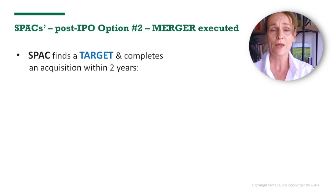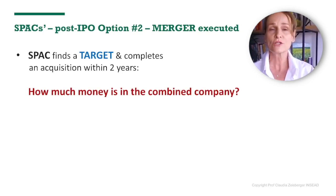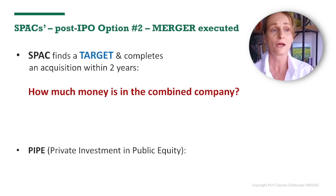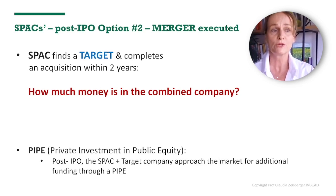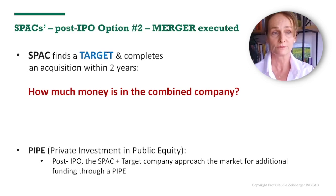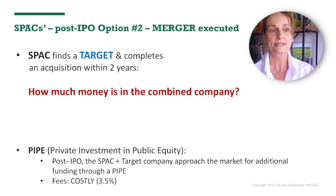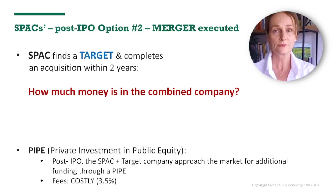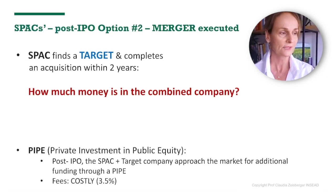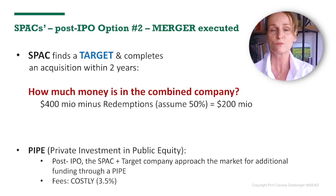The second option: the SPAC goes public and actually finds a target company and completes an acquisition within two years. PIPEs — private investments in public equity — come into play post-IPO. The SPAC and target company, post-merger, approach the market for additional capital, usually from traditional investors that play in the private capital space. They will invest a significant amount — at times more than was received at the IPO. Those PIPEs are quite costly, about 3.5% of the money raised. The question then is how much money is in the combined company's account.